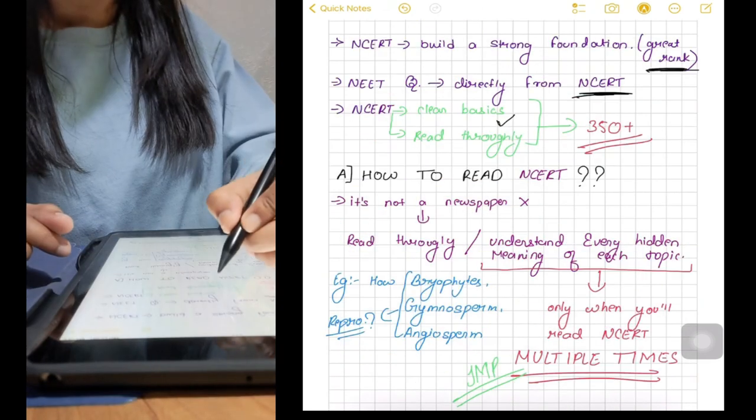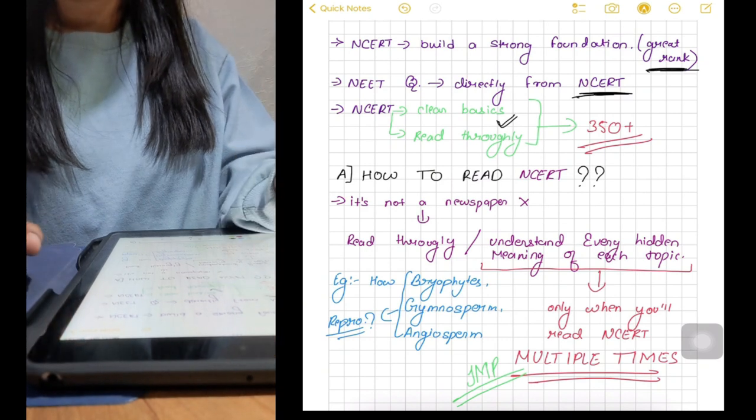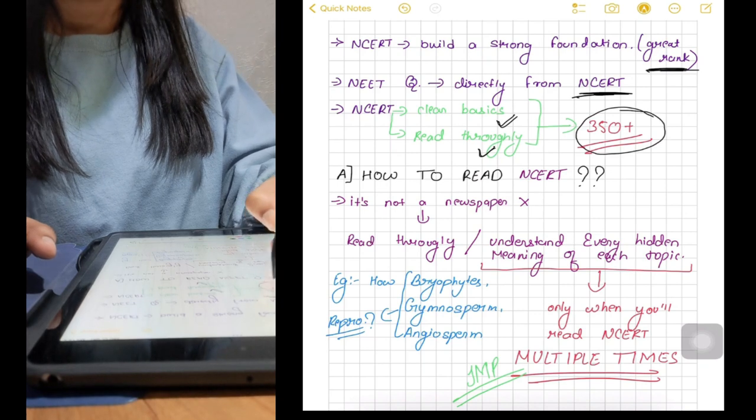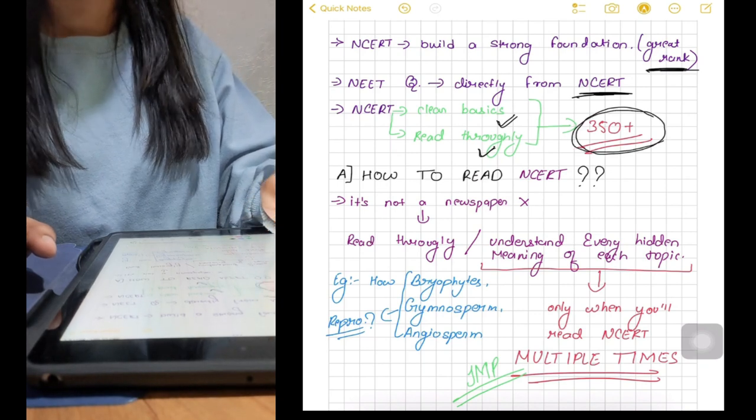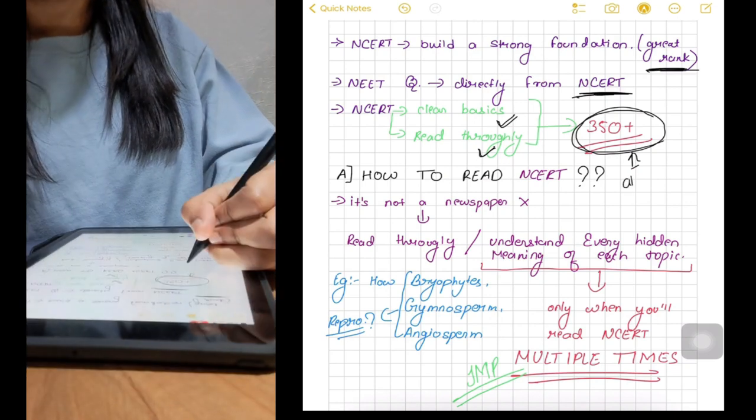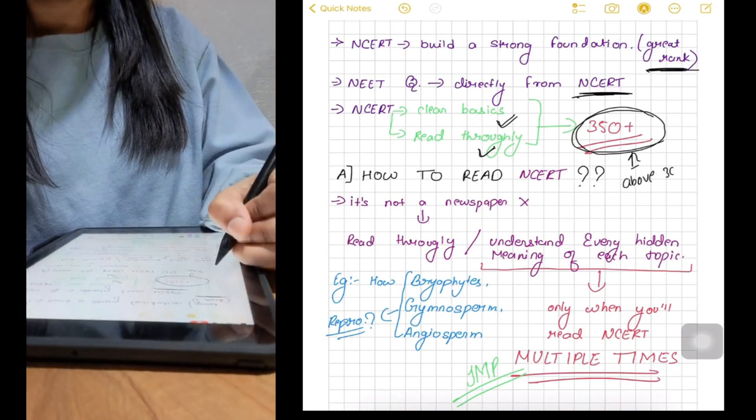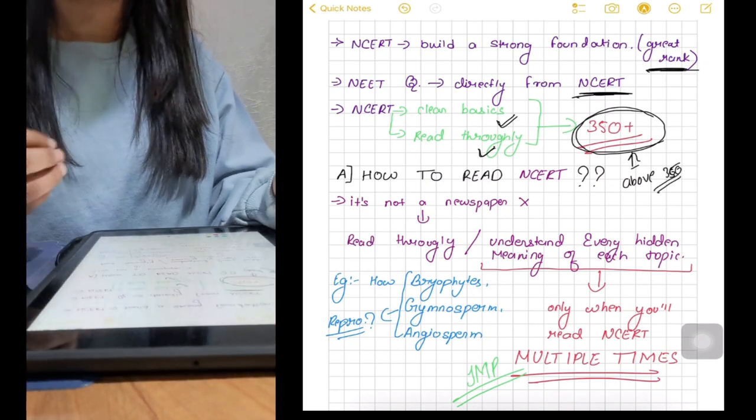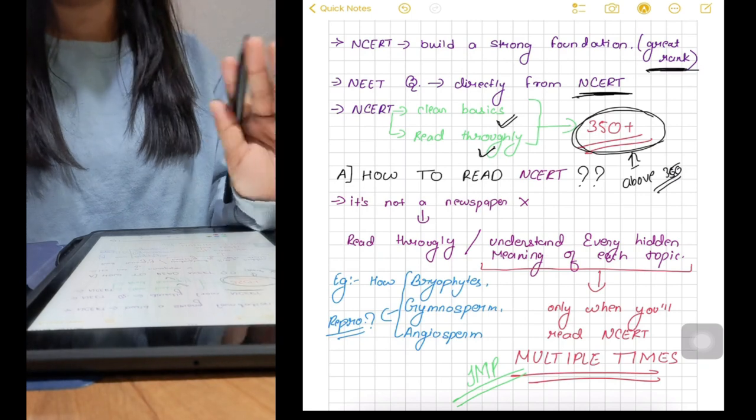If you have previous year question papers, you can see NEET question papers are based on the concept of NCRT only. Most of the questions are also asked directly from NCRT. So if your basics are proper and if you read NCRT thoroughly, you can definitely score above 350. It's easy to score high in biology with relatively less effort as compared to physics and chemistry.